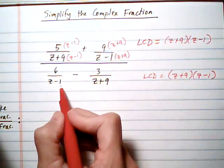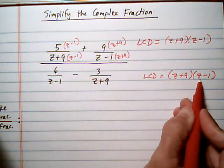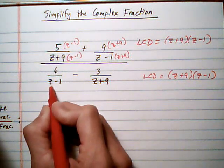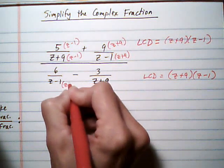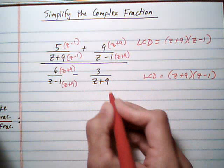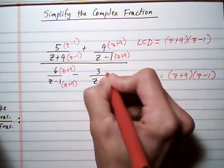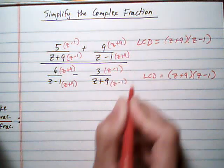And on the bottom, same idea. We have a z plus 9, z minus 1 common denominator. The first one has z minus 1. It needs z plus 9, so we do it top and bottom. The second one has the plus 9. It needs the z take away 1, so we multiply it in top and bottom.